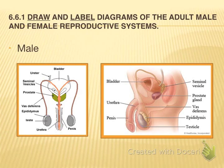Just an overview of the male system: there are two testes located in the scrotal sac that hang outside of the body cavity. This is an essential adaptation because the optimum production temperature for sperm is about 2 to 3 degrees lower than body temperature. The testes are the site of sperm production, or spermatogenesis, and they also act as an endocrine gland, producing testosterone.